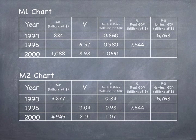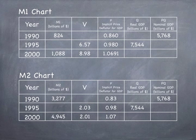In these two charts, we will be comparing the M1 and M2 measures of the money supply. We have years 1990, 1995, and 2000. We have M1 representing billions of dollars, as well as M2 representing billions of dollars, V for velocity, P for the implicit price deflator for GDP, Q for real GDP in billions of dollars, and PQ for nominal GDP in billions of dollars.